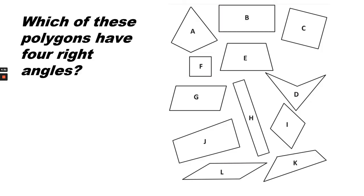Which of these polygons have four right angles? Answer. B, C, F, and H.